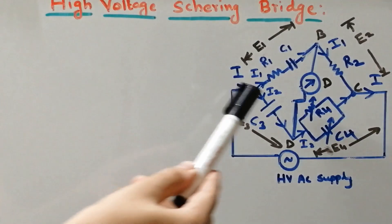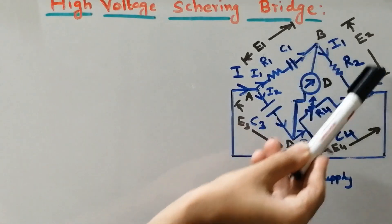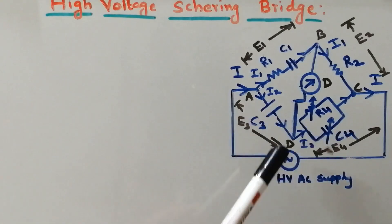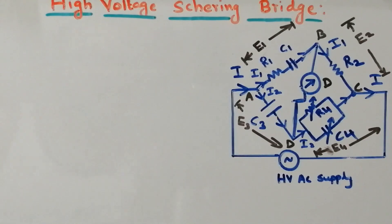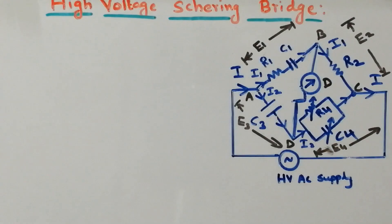The voltage across arm AB is equal to E1. Similarly, the voltage across arm BC is equal to E2, and the voltage across arm CD is E4. And finally, the voltage across arm AD is equal to E3. Please note these parameters. The unknown values of resistor R1 and capacitor C1 are to be calculated. R1 and C1 represent the equivalent circuit of the insulating material.